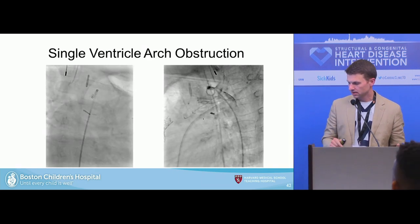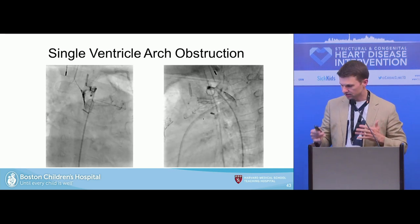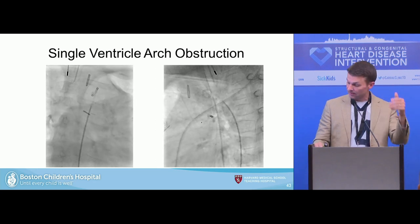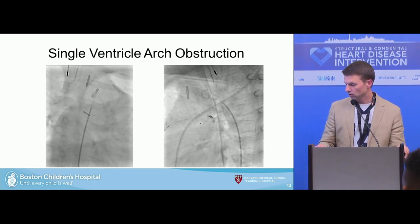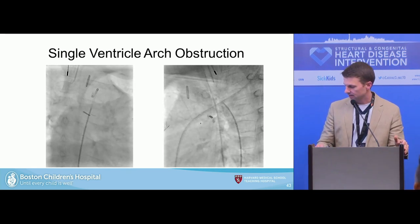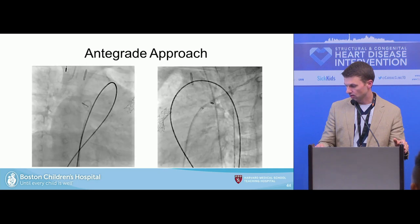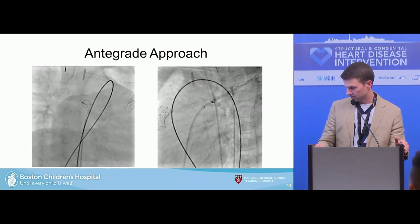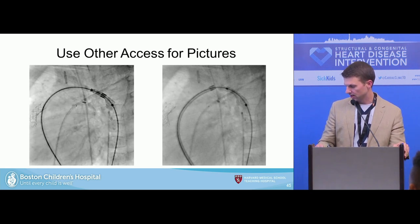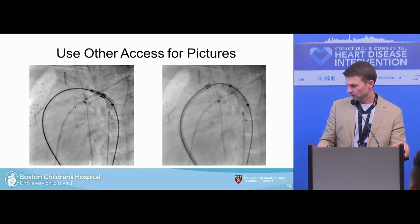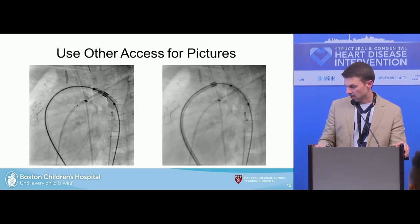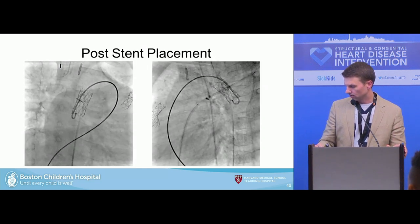Single ventricle arch obstruction — it's a challenging decision of when to intervene. Any gradient in the setting of a single ventricle can be important, so think about ventricular dysfunction, AV valve regurgitation, and diastolic pressure gradient. Take advantage of being able to go antegrade if they have not yet been to Fontan. This was a single ventricle Sano patient where the team did not want to go back to the OR for arch obstruction — gradient of 25. It looked like residual tissue not addressed at surgery. Balloon was tried first with no change, so we crossed antegrade with a wedge catheter, switched to a stiffer wire, and placed a Genesis XD stent that can go to adult size. Take advantage of having second access from below to guide your interventions.